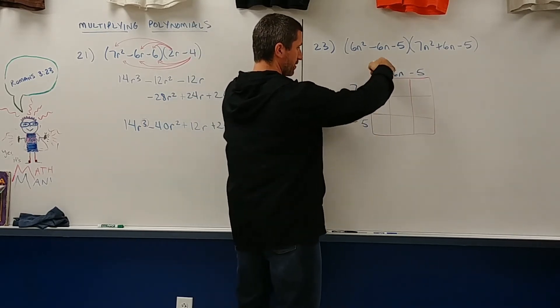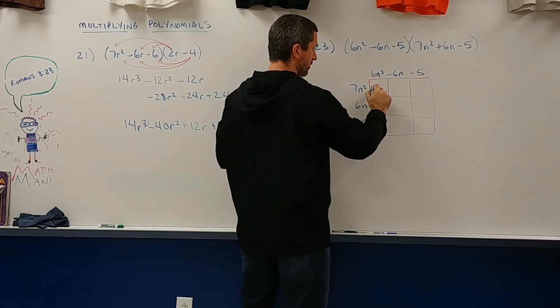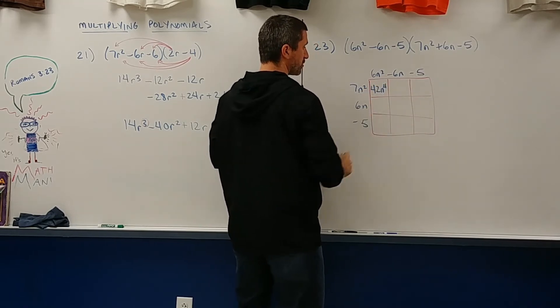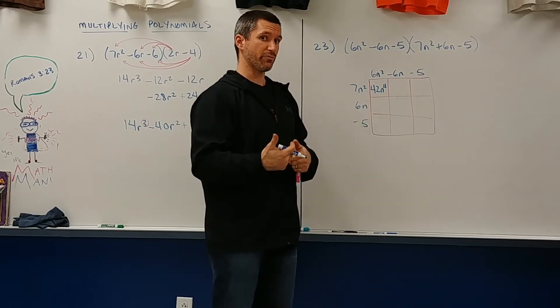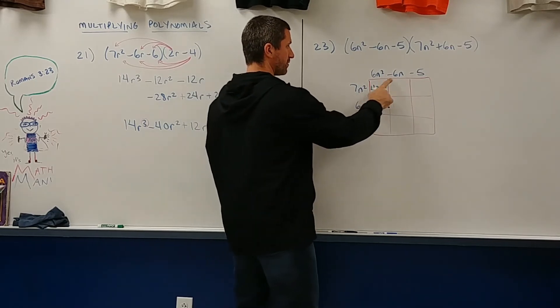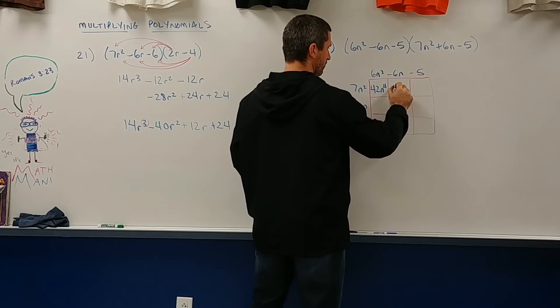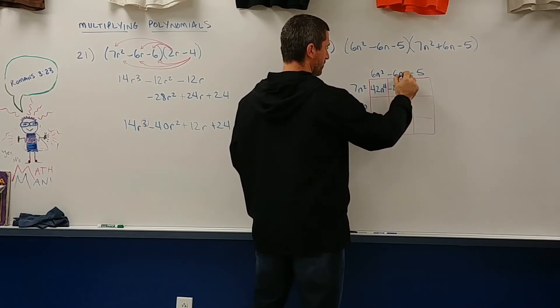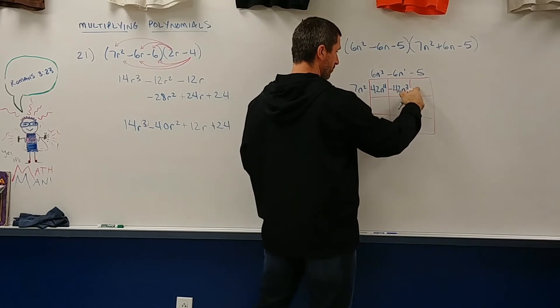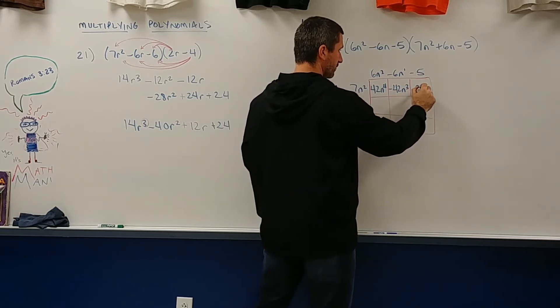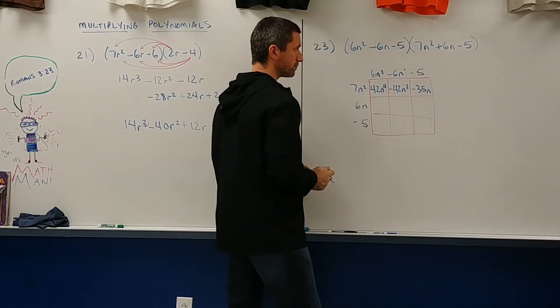So we're gonna go 6n squared and 7n squared is 42n to the 4th. When you're multiplying the same base, you add the exponents. That's why that went up to a 4th. 7 times negative 6n is negative 42n cubed. That's 2 plus 1 on the exponent there. And then this last one in the row is negative 35n squared.